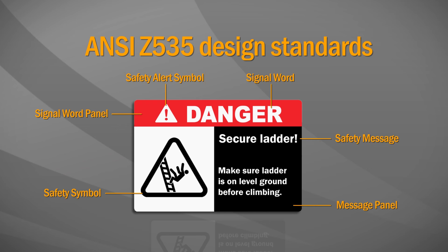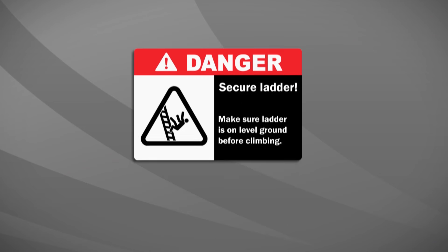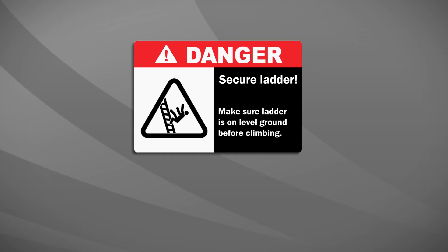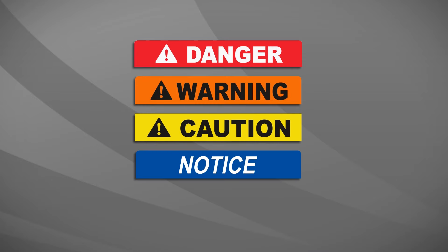To comply with OSHA standards and improve hazard identification, sign and label designs should always follow the ANSI Z535 design standards. One of ANSI's label and sign design standards defines how signal words should be used to describe various hazards and safety levels. These signal words are the large words found at the top of all safety labels and signs.